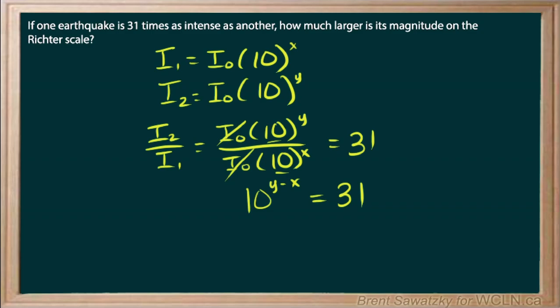But we do know about logarithms now. So let's log both sides. And we bring that exponent down. Y minus X log 10 is equal to log 31. Now, this, of course, is log base 10 in both cases. And log base 10 of 10, we can just say that's a 1.